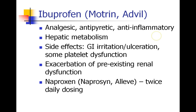Ibuprofen, which goes by the brand names Motrin or Advil, is a good analgesic, antipyretic, and anti-inflammatory drug. It's metabolized in the liver, and side effects most commonly include GI irritation, bleeding, and some platelet dysfunction. Patients with pre-existing renal dysfunction may see worsening of renal function because renal blood flow is decreased. There's also naproxen — brand name Aleve — which is almost the same as ibuprofen but with twice-daily dosing.